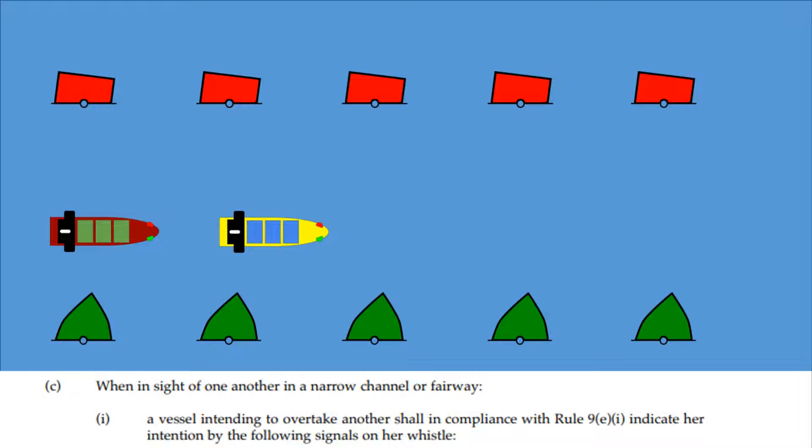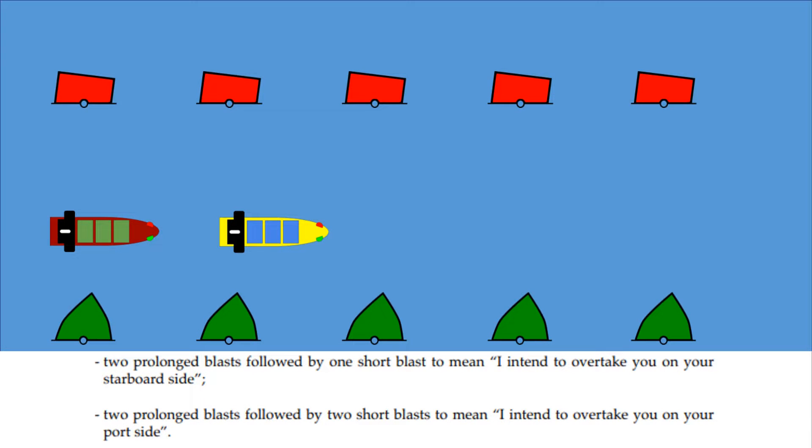When in sight of one another in a narrow channel or fairway, a vessel intending to overtake another shall, in compliance with Rule 9E Part 1, indicate her intention by the following signals on her whistle. Two prolonged blasts followed by one short blast to mean I intend to overtake you on your starboard side. Two prolonged blasts followed by two short blasts to mean I intend to overtake you on your port side.